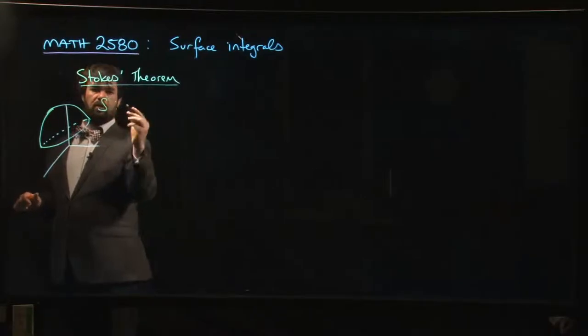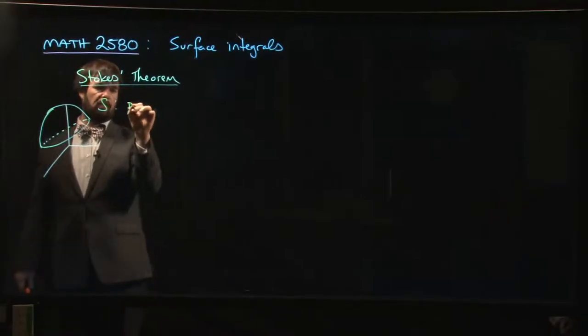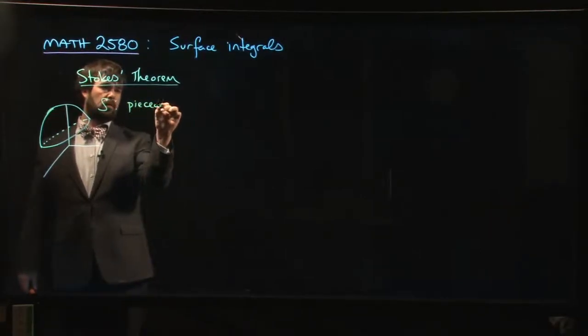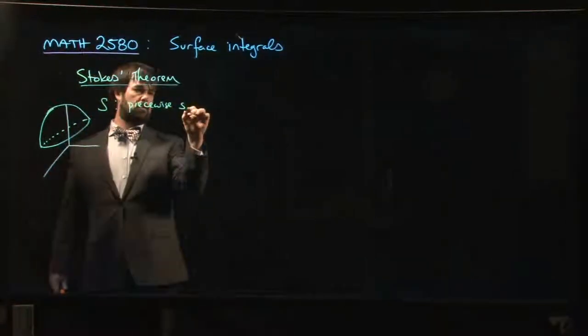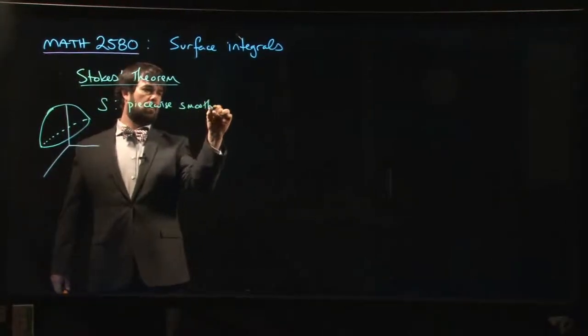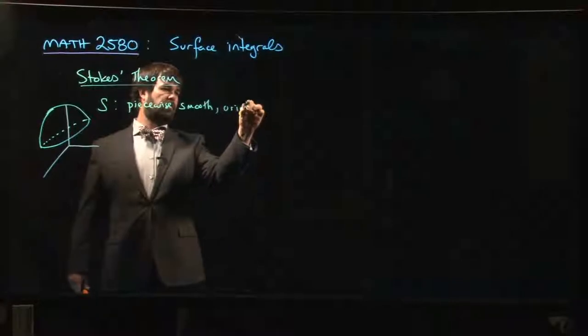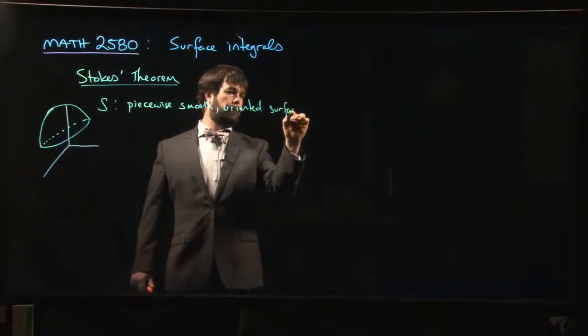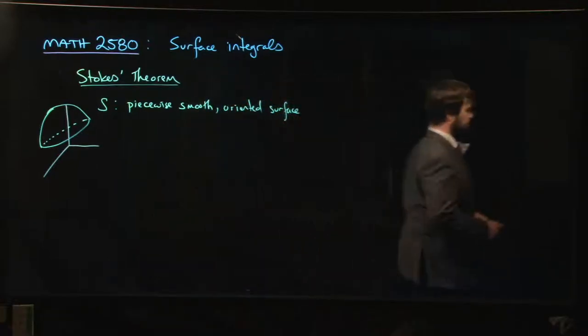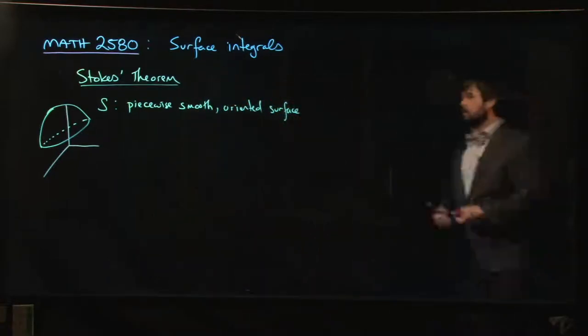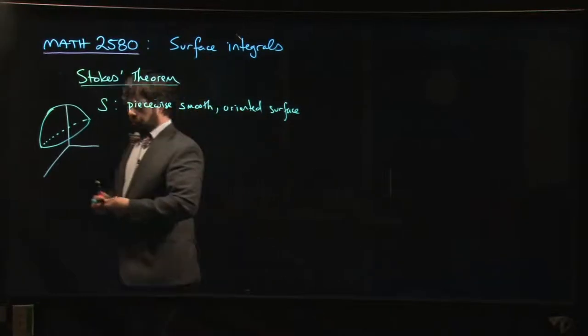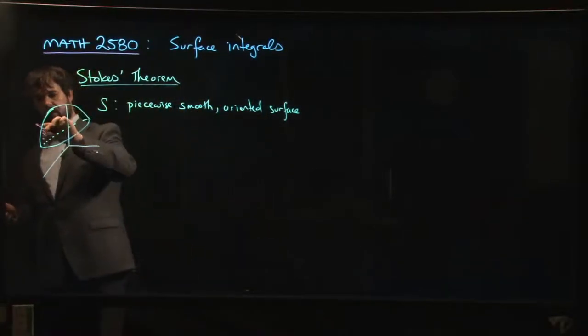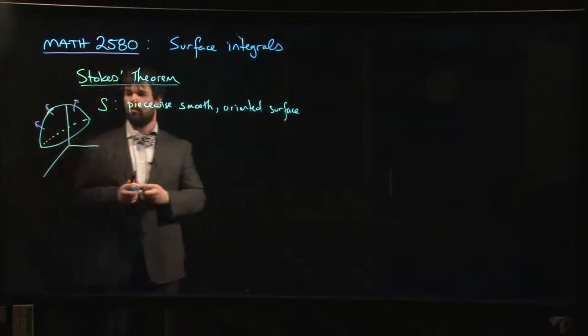So S is going to be some smooth or at least piecewise smooth oriented surface. Okay? So let me grab a color here. So we have a choice of orientation. Let's say it's oriented this way, something like that.